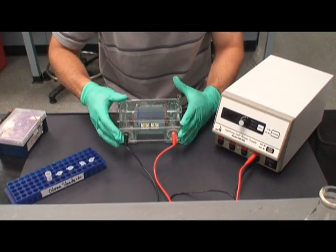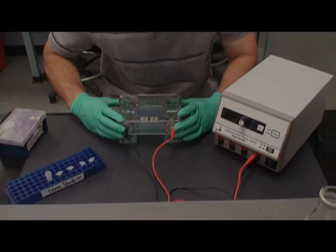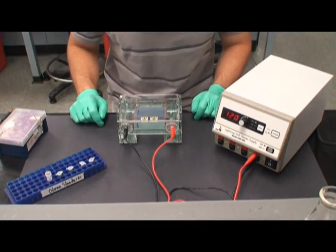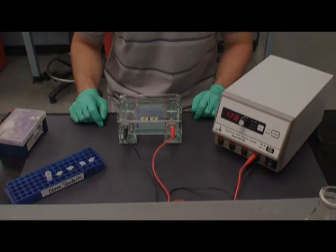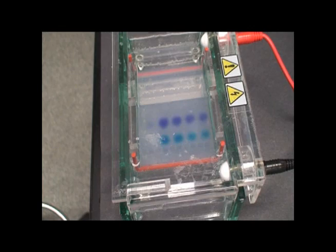With all the wells loaded, attach the cover and electrodes to the box. Set the current to 120 volts and run for 60 minutes. Remember, the gel now has current, so don't touch it as it will shock you.